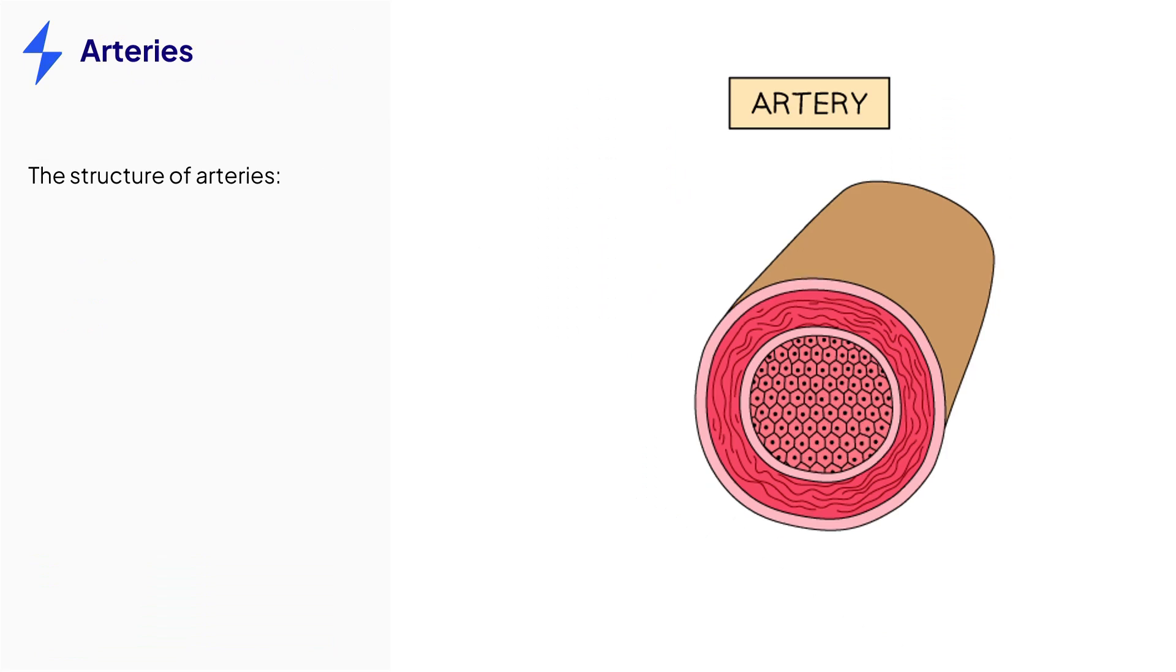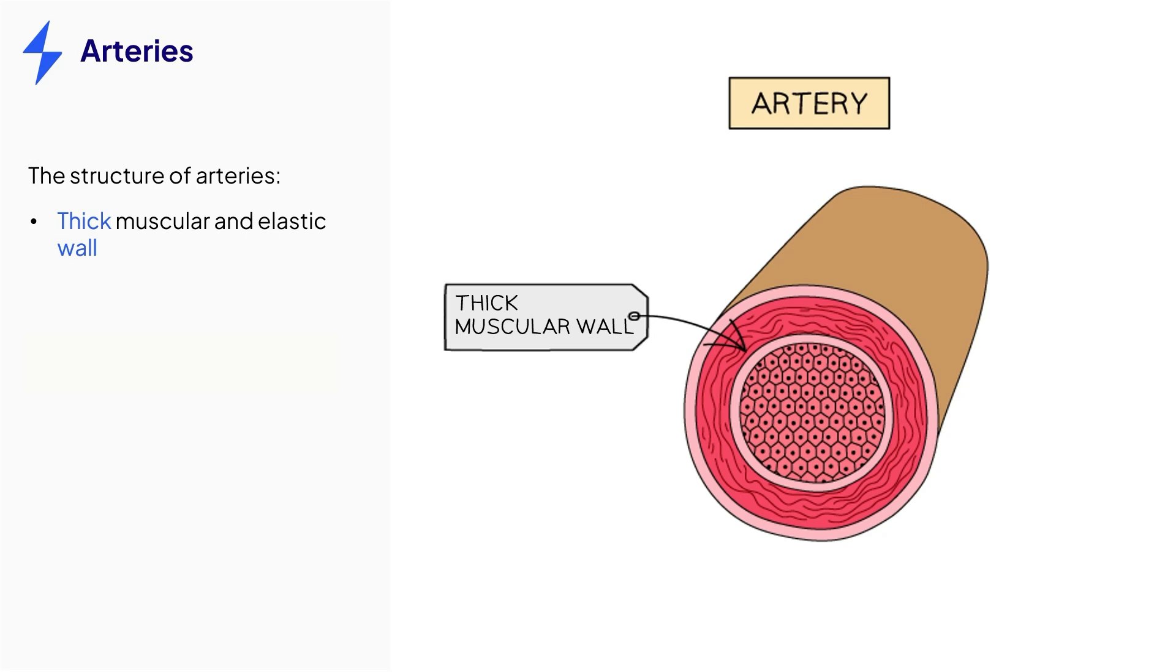All arteries other than the pulmonary artery carry oxygenated blood away from the heart to all the major organs in the body. They have a thick wall made of muscle and elastic fibers to withstand the high pressure of the blood inside. The lumen, which is the hollow part of blood vessels, has a narrow diameter. You only need to describe the structure of each vessel. You do not need to explain it unless you are doing the extended syllabus content.